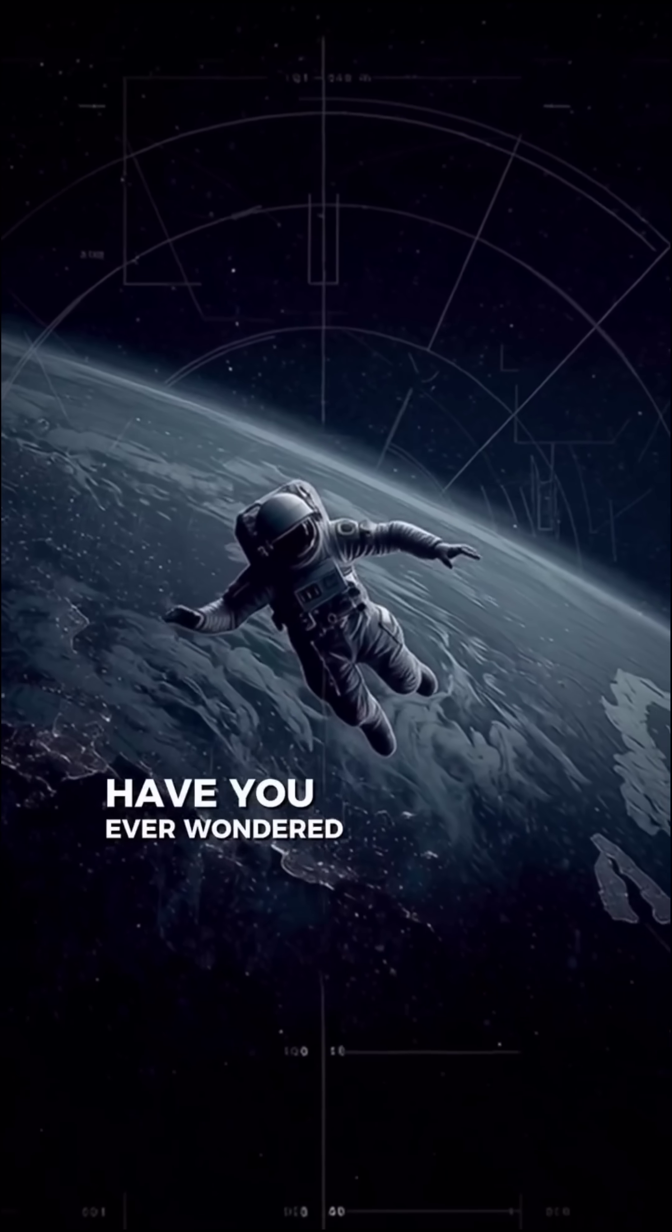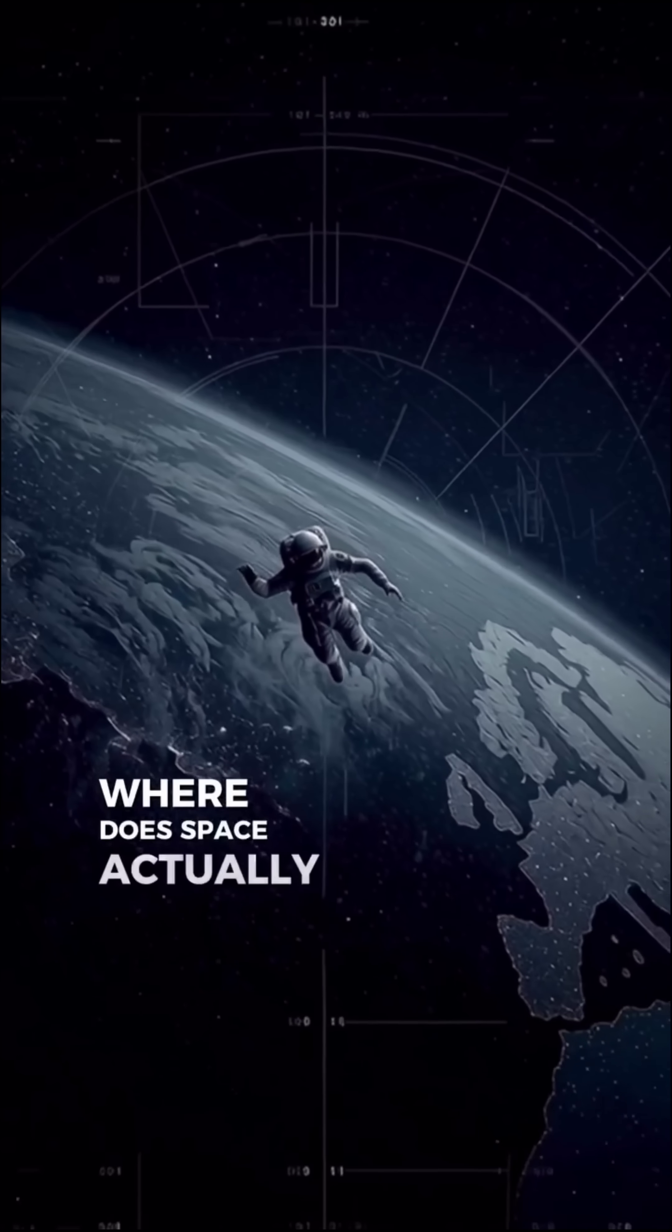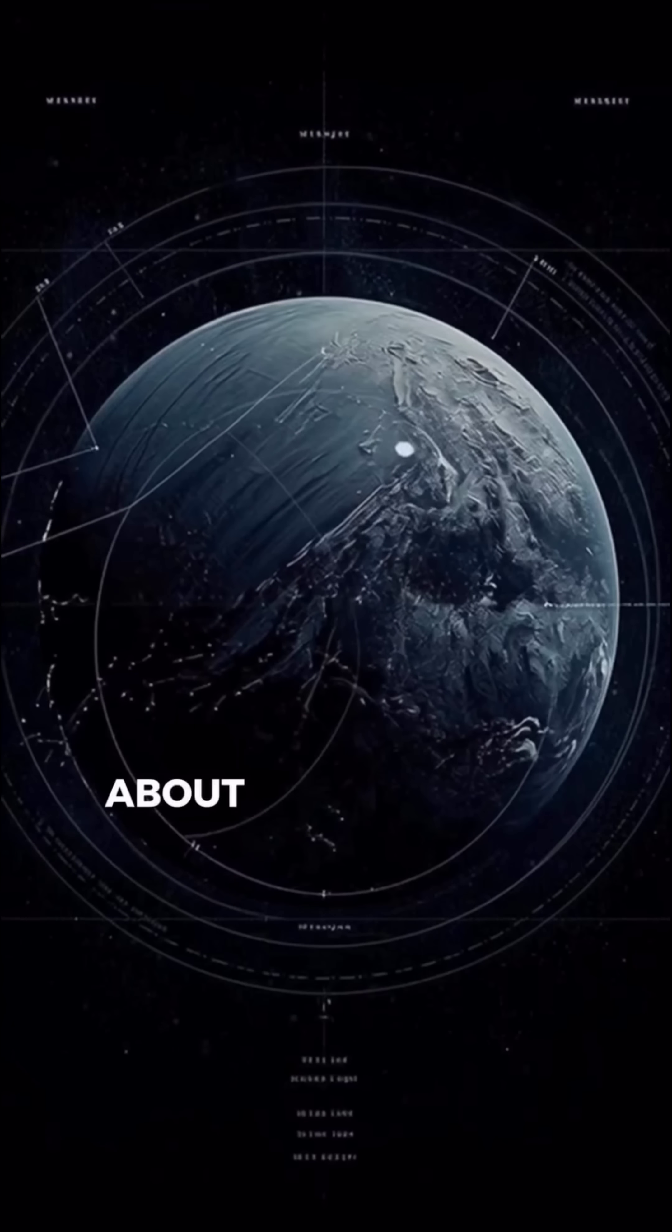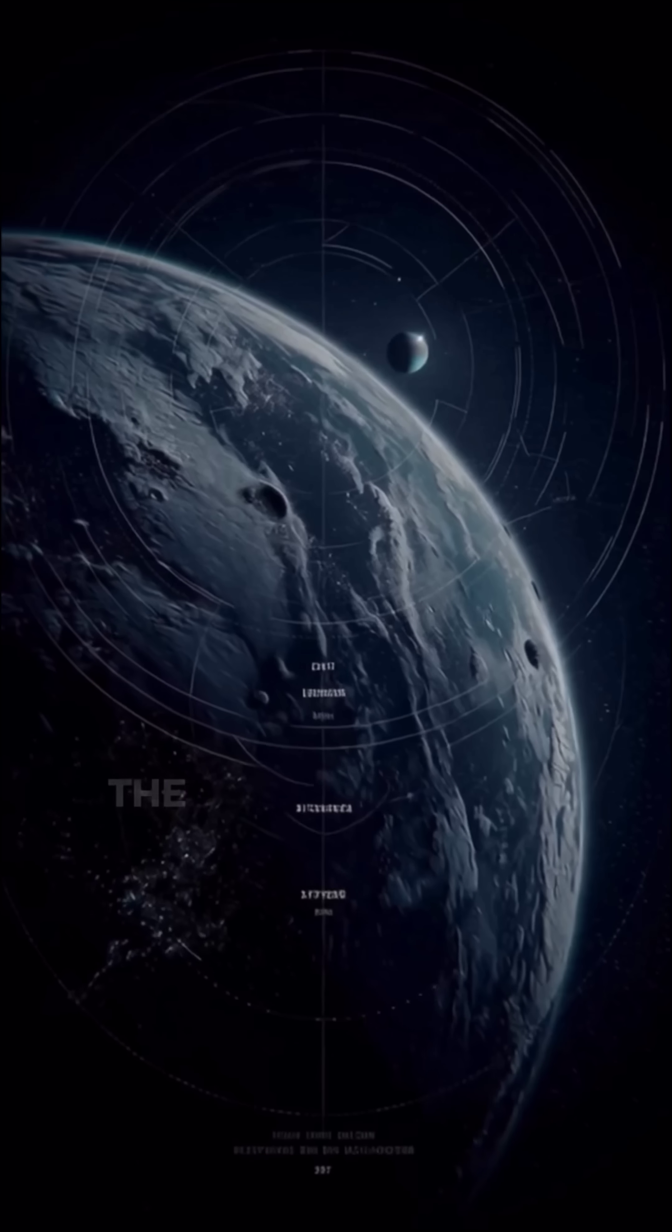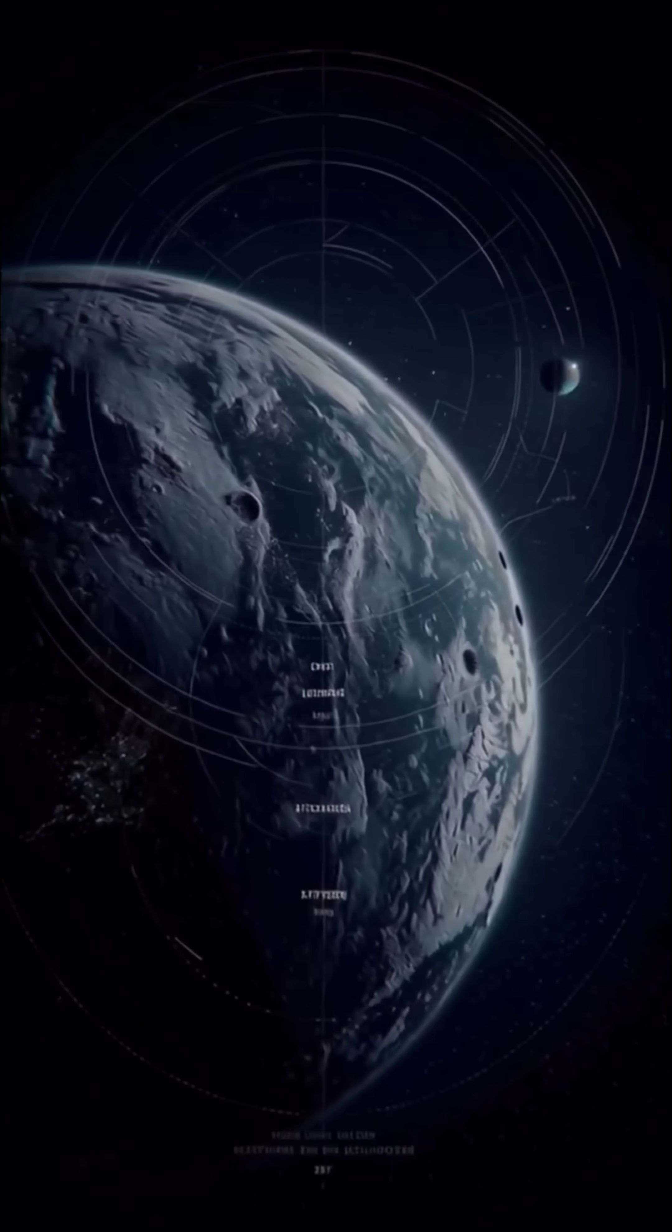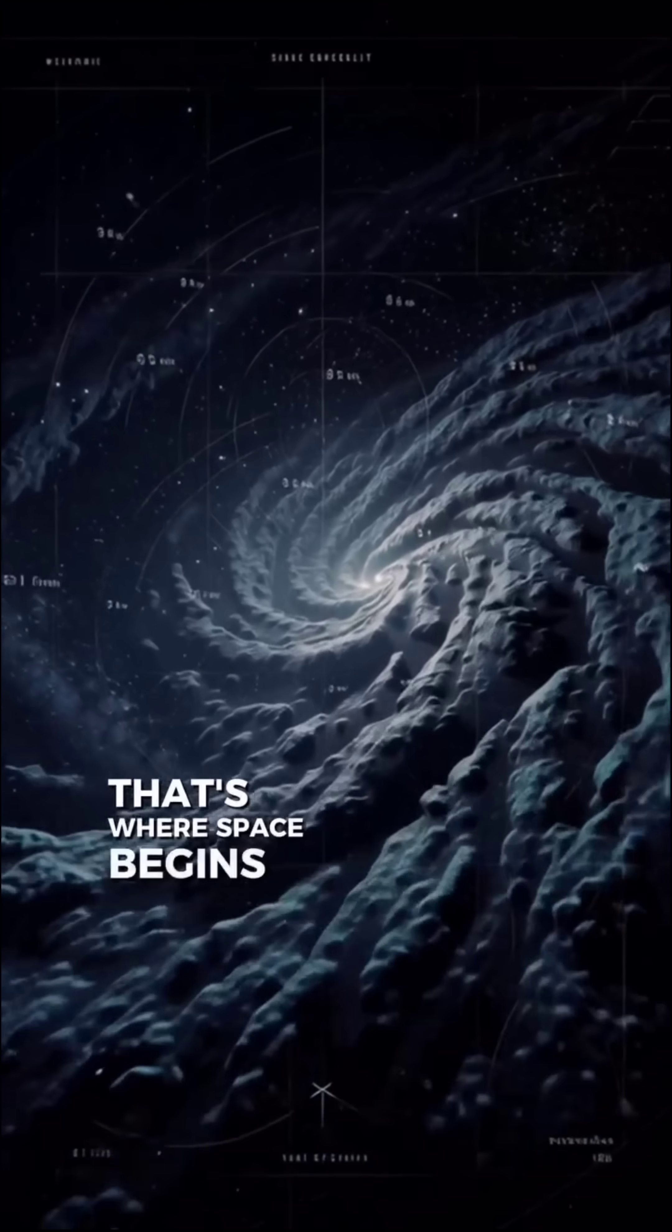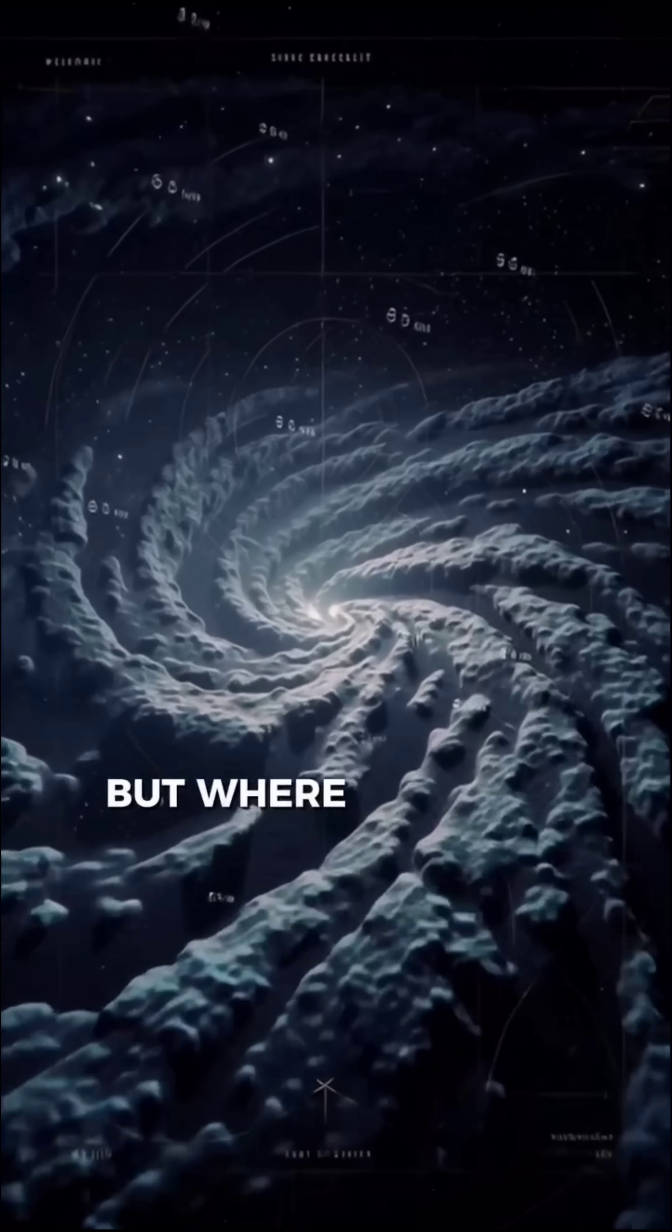Have you ever wondered where does space actually end? About 100 kilometers above Earth, at the Kármán Line, the sky turns black. That's where space begins. But where does it stop?